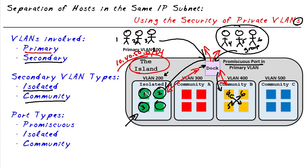Going back to our analogy, person one will not be able to talk to persons two, three, four, five, or six because they are in the isolated VLAN. They're effectively blocked off from communicating with all the other devices on that switch.